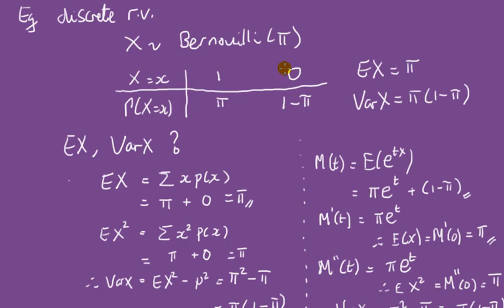Let's look at an example — a discrete random variable. I'll do two examples: a discrete random variable, then give pointers for the continuous case. Let's say x is Bernoulli with parameter pi. Here's the probability function: 1 for success happens with chance pi, and 0 for failure happens with probability 1 minus pi — these add up to 1. We know for a Bernoulli, the mean (expected value of x) is pi, and the variance of x is pi times 1 minus pi, which you can read as probability of success times probability of failure.